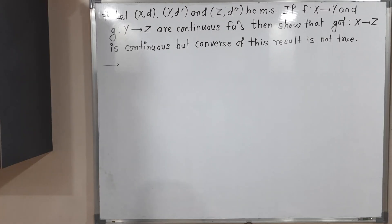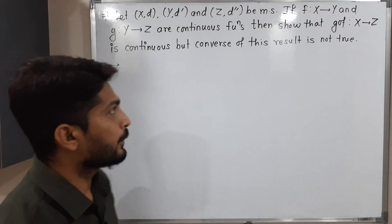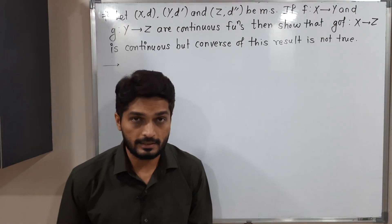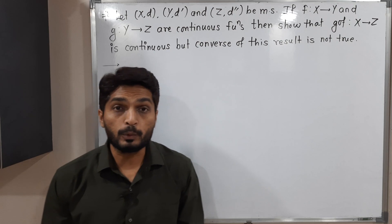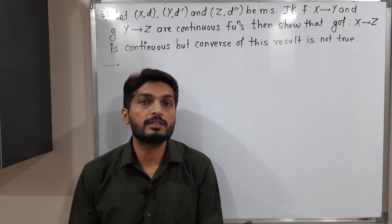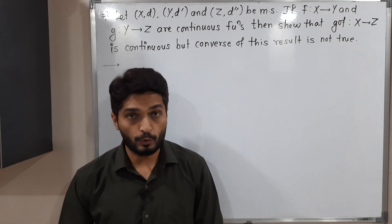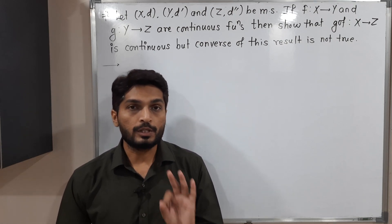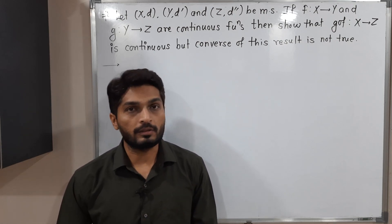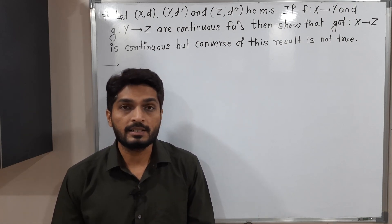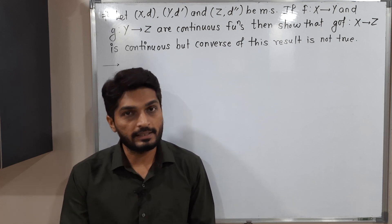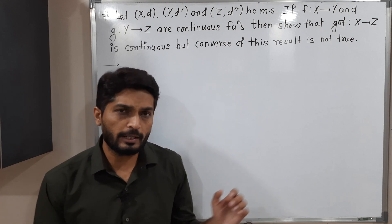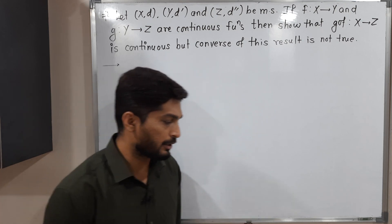Hi everyone. In this video we are going to discuss this result, as well as prove that the converse of this result is not true. We have three metric spaces XD, YD dash, and ZD double dash. Let me draw the diagram here.